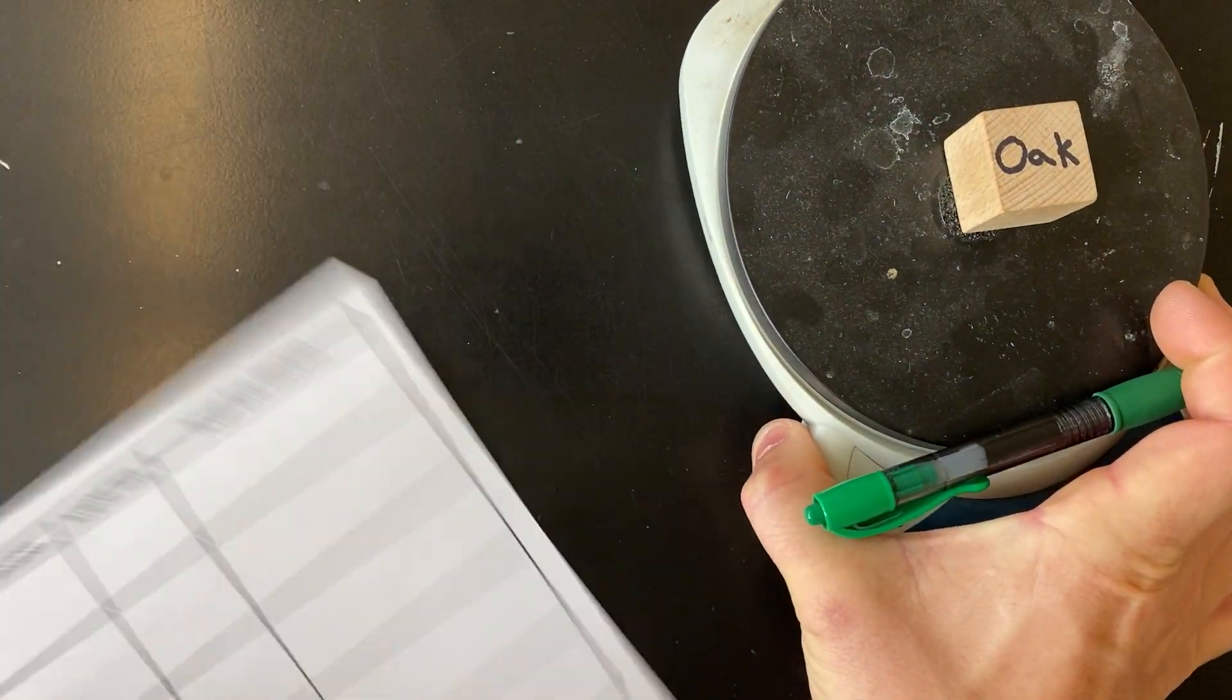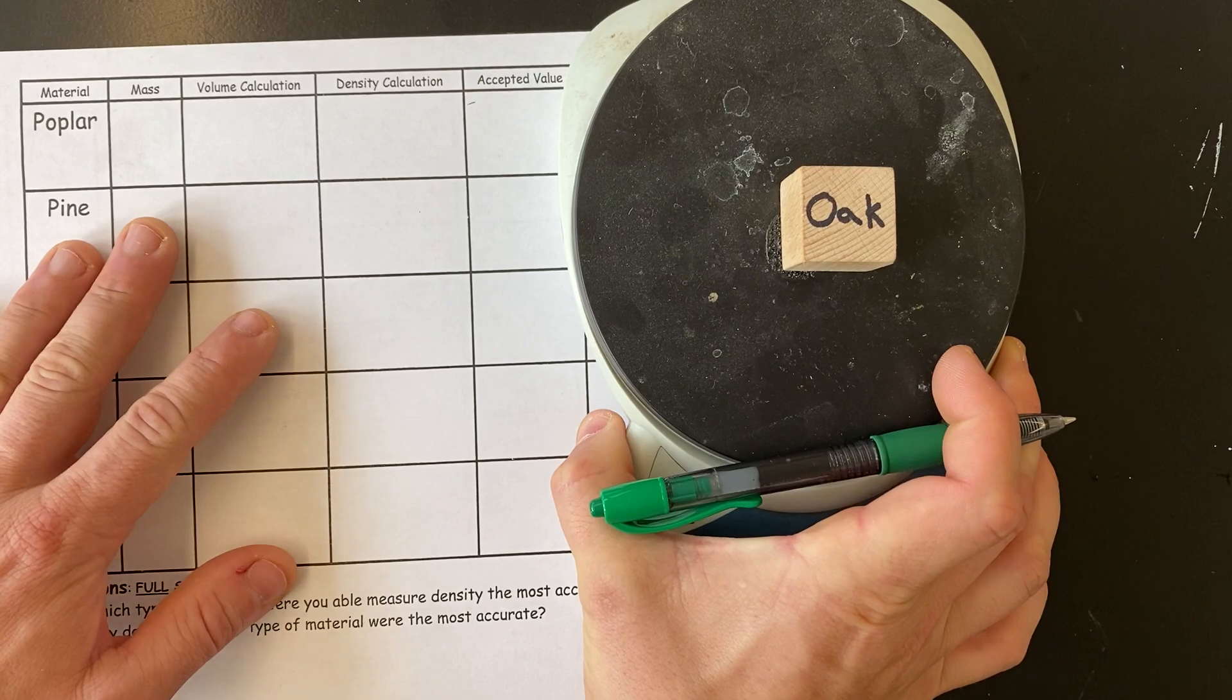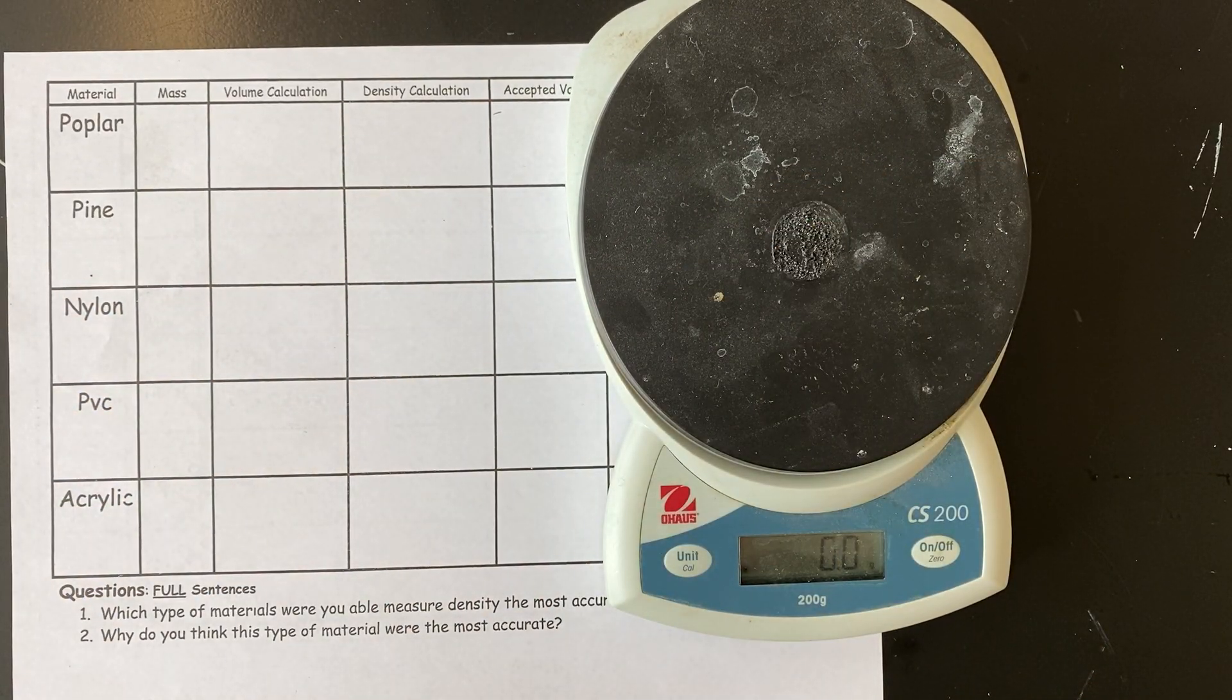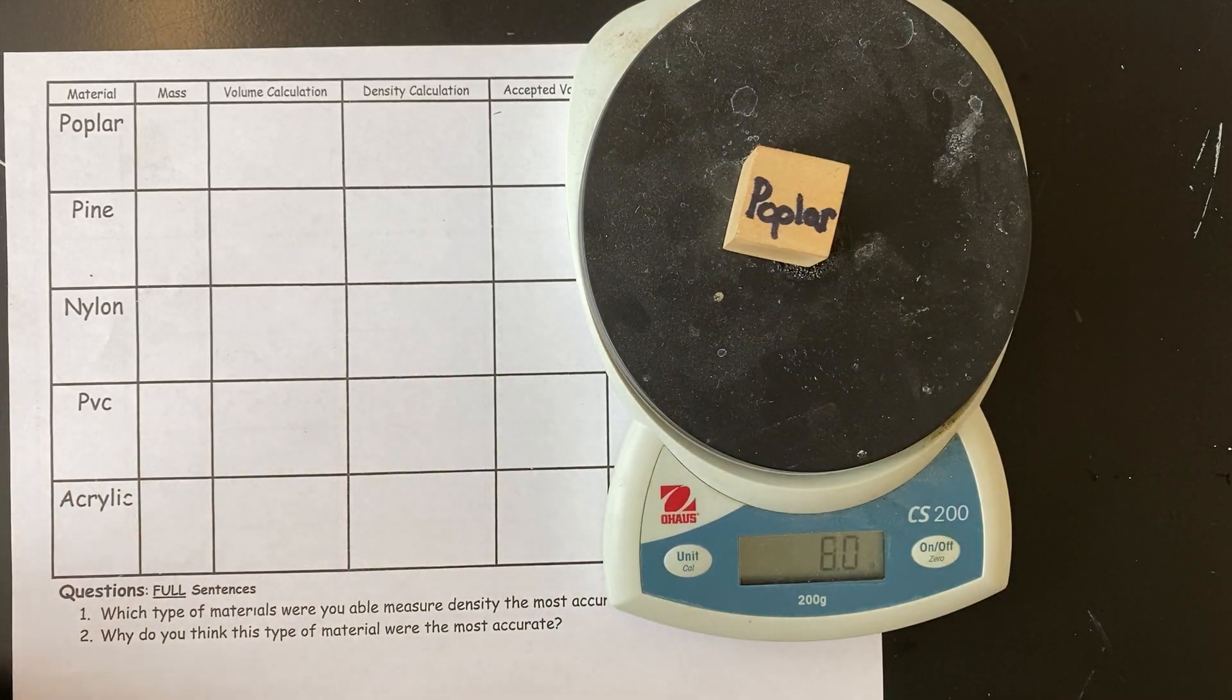Then we go to the back. Yes, there's a back. So poplar is a type of tree, so that's the name of the wood.